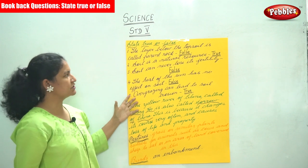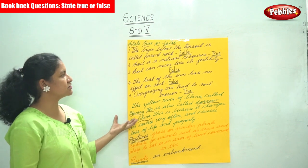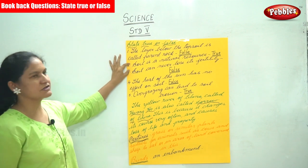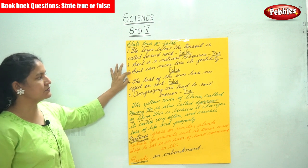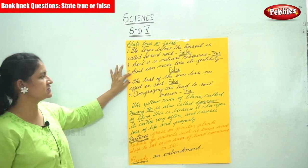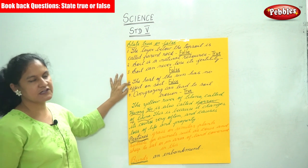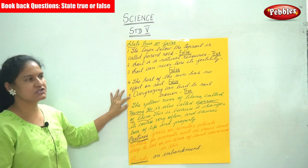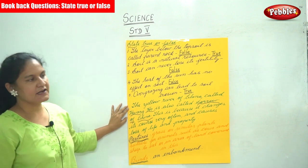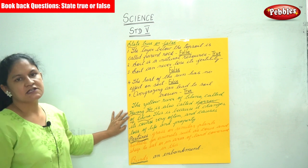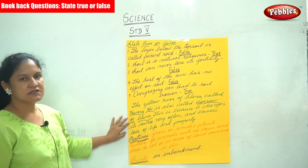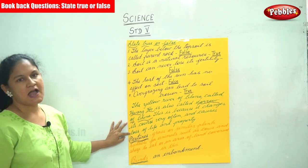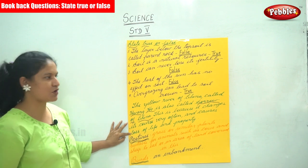To summarize the true or false: the layer below the topsoil is called parent rock — false. Soil is a natural resource — true. Soil can never lose its fertility — false. The heat of the sun has no effect on soil — false. Overgrazing can lead to soil erosion — true. The Yellow River of China called Hwangho is also called the Sorrow of China, because it changes its course very often and causes loss of life and property.